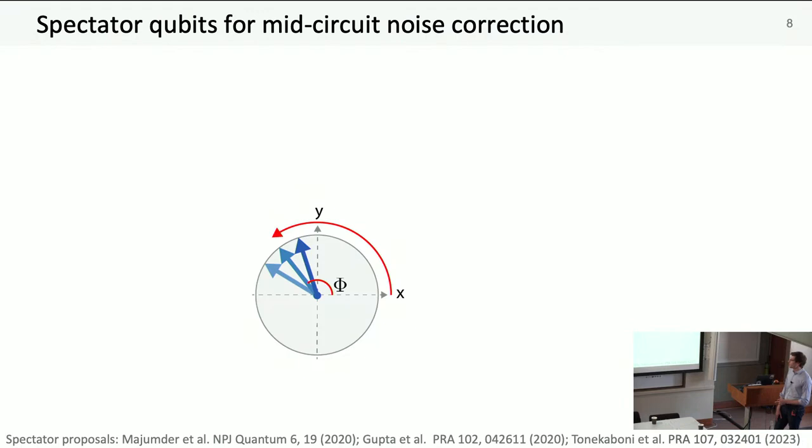We can consider a single qubit. Here we're looking at the XY projection on the Bloch sphere. We prepare it in the X state and let it evolve for some time. If it couples to its environment, maybe we have a quantization axis, it will precess. If that environment changes in time, in each shot we acquire a different phase. You average the shots, you get decoherence.